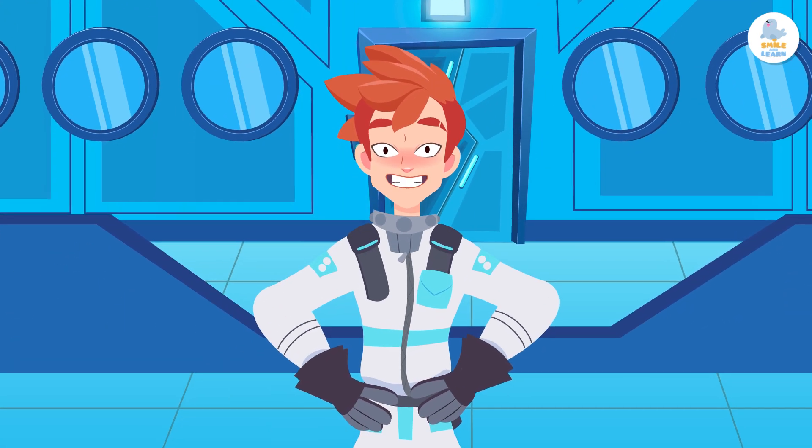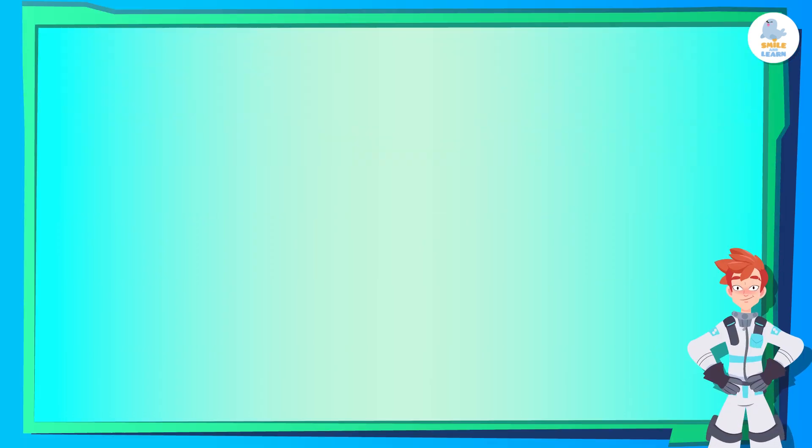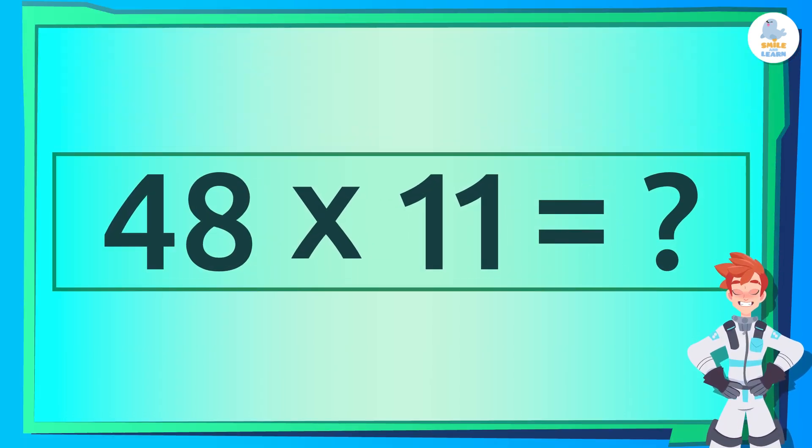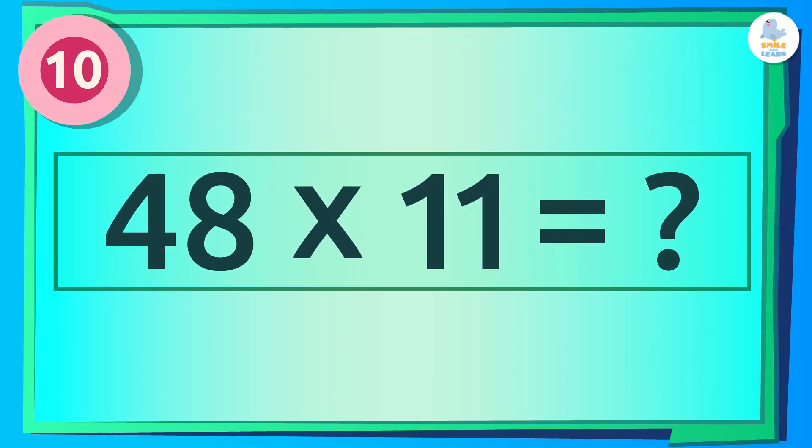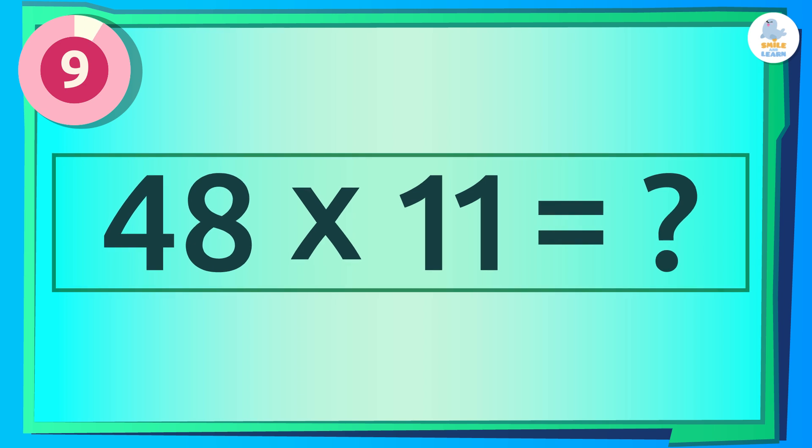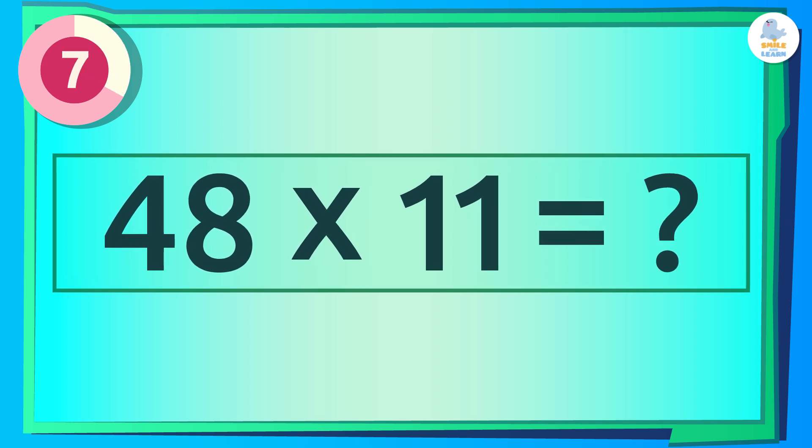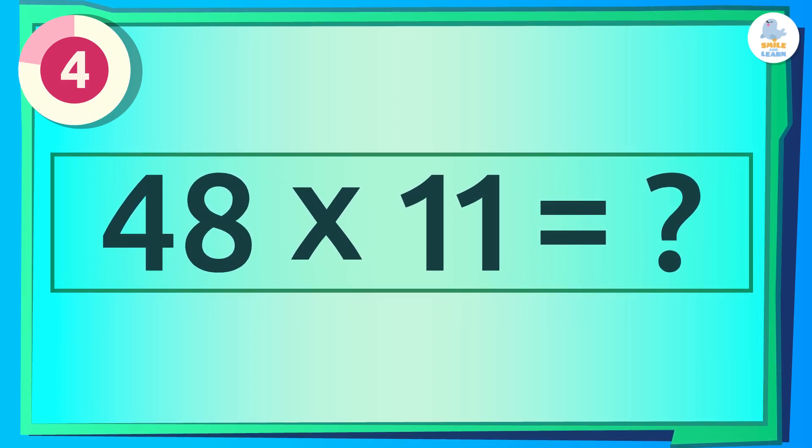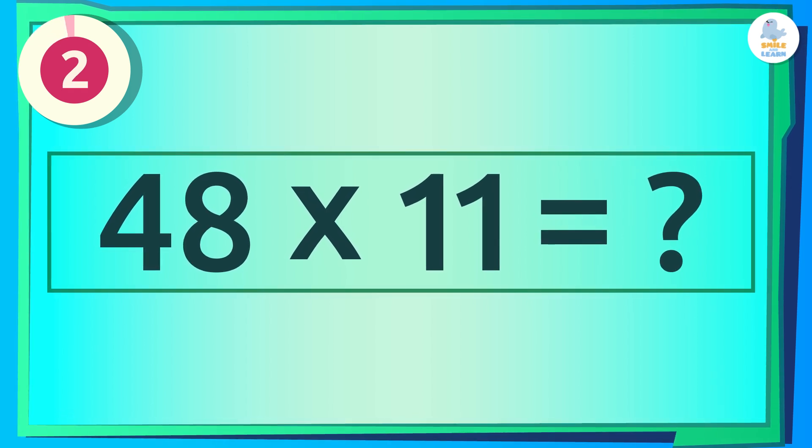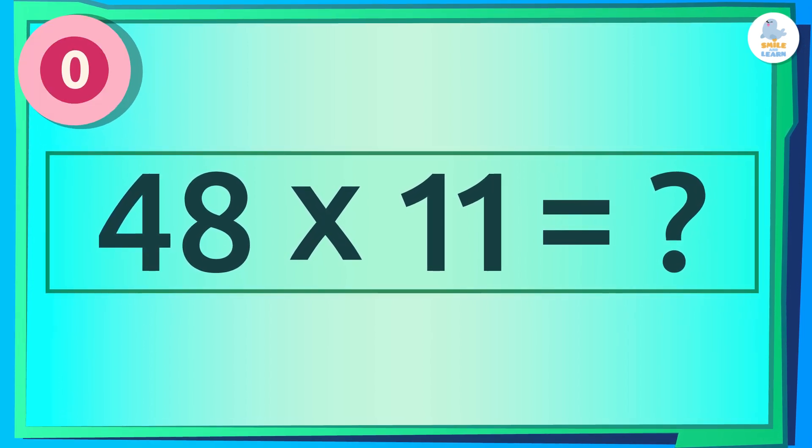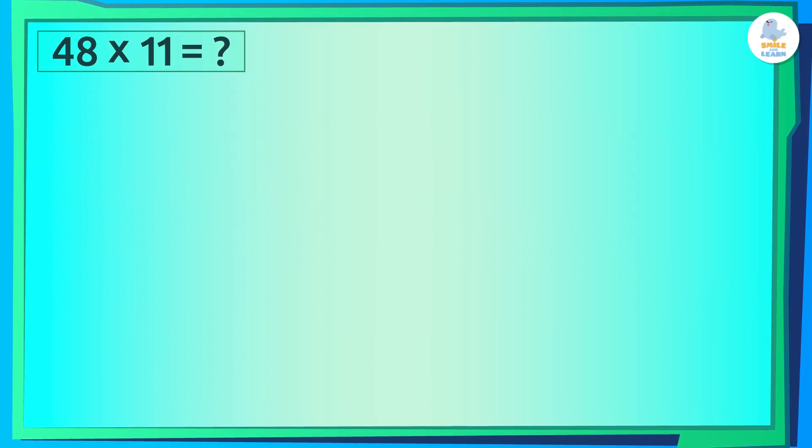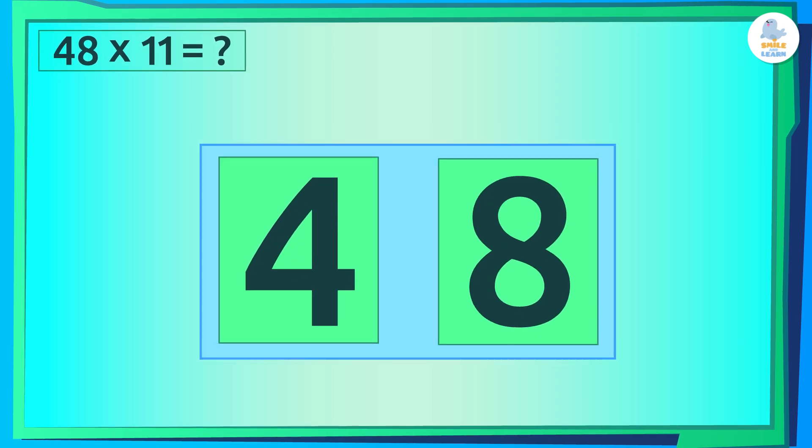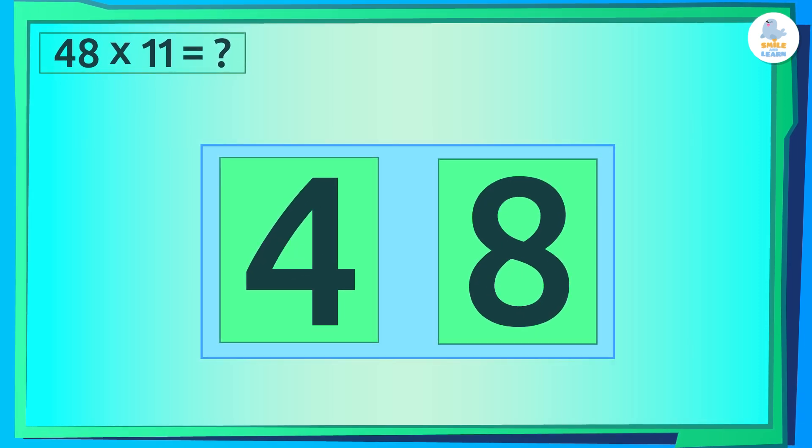Now it's your turn! What is 48 times 11? As you know, the first thing you have to do is separate two digits, 4 and 8.